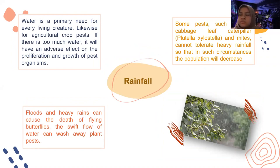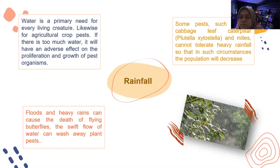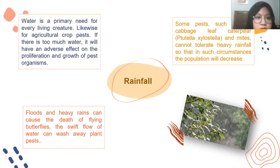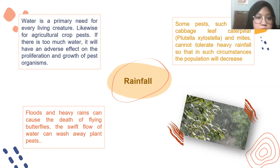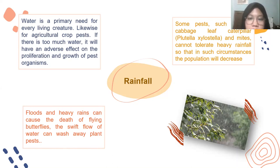Next, rainfall. Water is a primary need for every living creature. For agricultural crop pests, if there is too much water, it will have an adverse effect on the proliferation and growth of pest organisms. Floods and heavy rains can cause the death of flying butterflies. The swift flow of water can wash away plant pests. Some pests, such as the cabbage leaf caterpillar Plutella xylostella, cannot tolerate heavy rainfall, so in such circumstances the population will decrease.